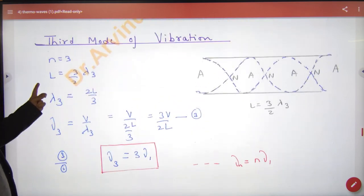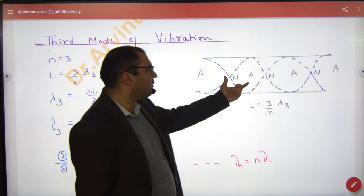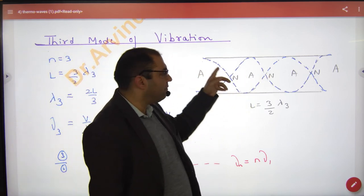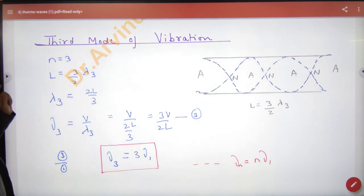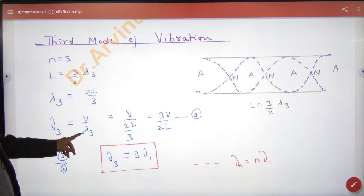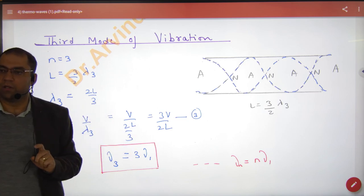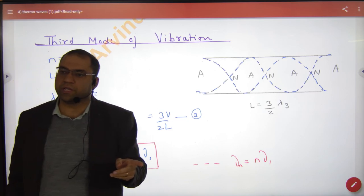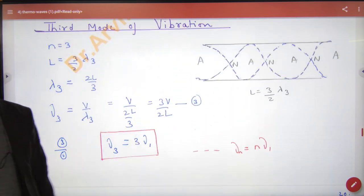Third mode of vibration, put n is 3. 3 by 2 lambda. Two loops means lambda, lambda plus lambda by 4 plus lambda by 4 will give 3 by 2 lambda. So this diagram is. Cross multiply, lambda 3. New 3, new 1 divide, so 3 into new 1. So the first frequency new 1, 2 into new 1, 3 into new 1, nth is N into new 1.